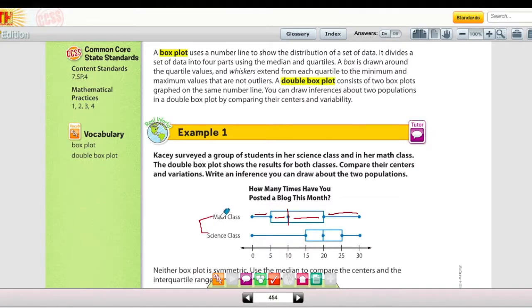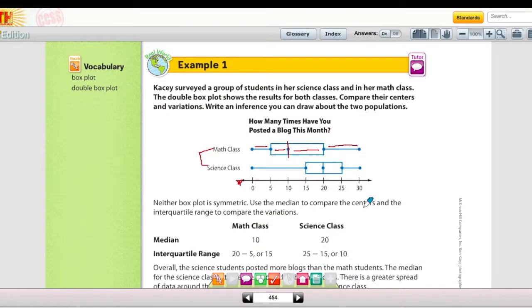A double boxplot consists of two boxplots graphed on the same number line. Here's one number line and two different boxplots plotted on that number line. You can draw inferences about two populations in a double boxplot by comparing their centers and variability. Right off the start here, we have new vocabulary and it might seem overwhelming, but hang with me and work through the examples and we'll be just fine.